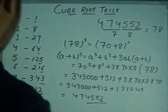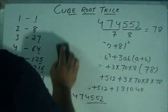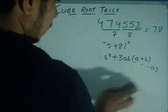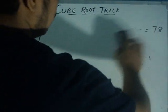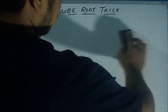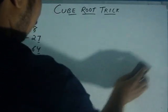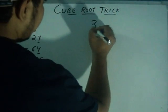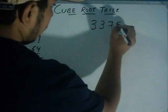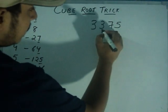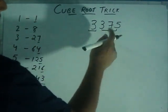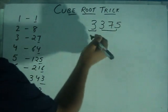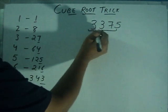Let's take another example to explain this trick properly. Suppose we have 3375.